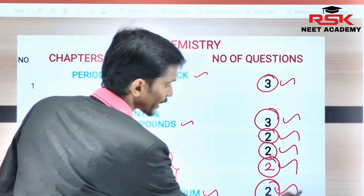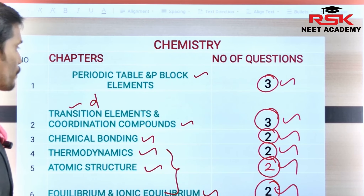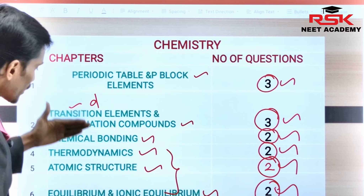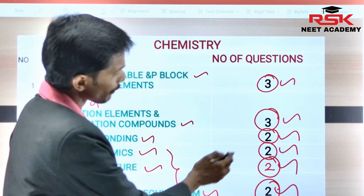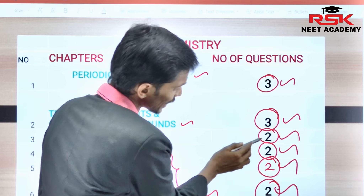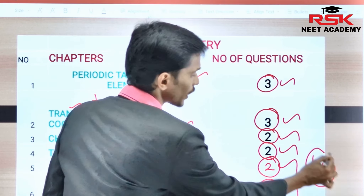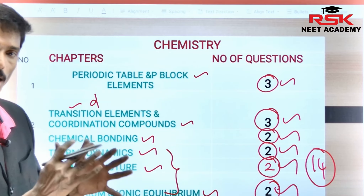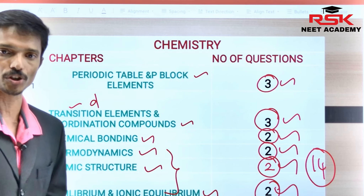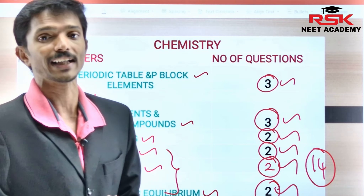If you study these chapters, you will be able to answer around 2 questions each. In chemistry, you can study these chapters for a maximum of 3, 6, 8, 10, 12, 14 questions. If you are able to study these 14 questions from the important chapters, you will be well prepared for the 2025 exams.